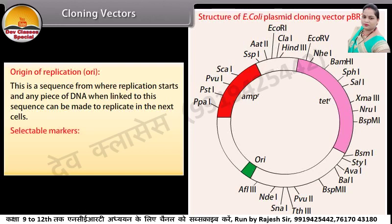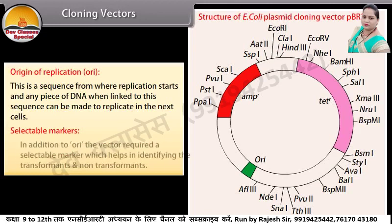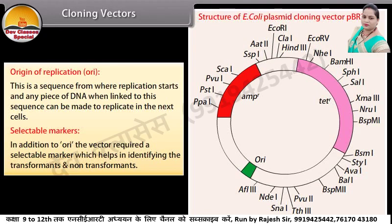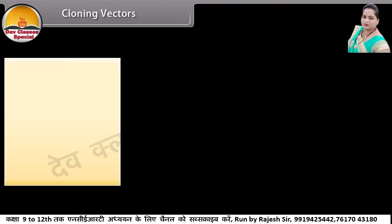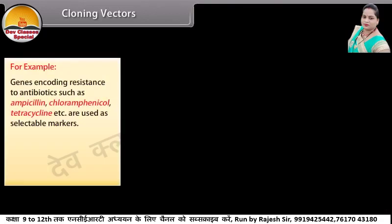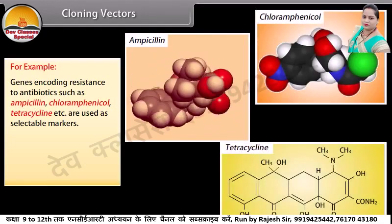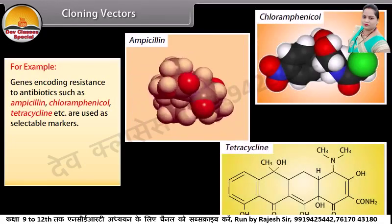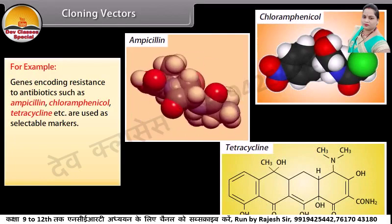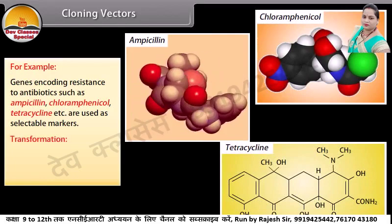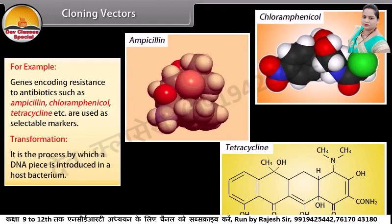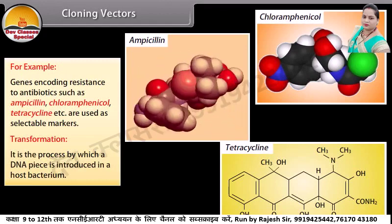Selectable markers: in addition to the origin of replication, the vector requires a selectable marker which helps in identifying the transformants and non-transformants. For example, genes encoding resistance to antibiotics such as ampicillin, chloramphenicol, tetracycline, etc. are used as selectable markers. Transformation is a process by which a DNA piece is introduced into a host bacterium.